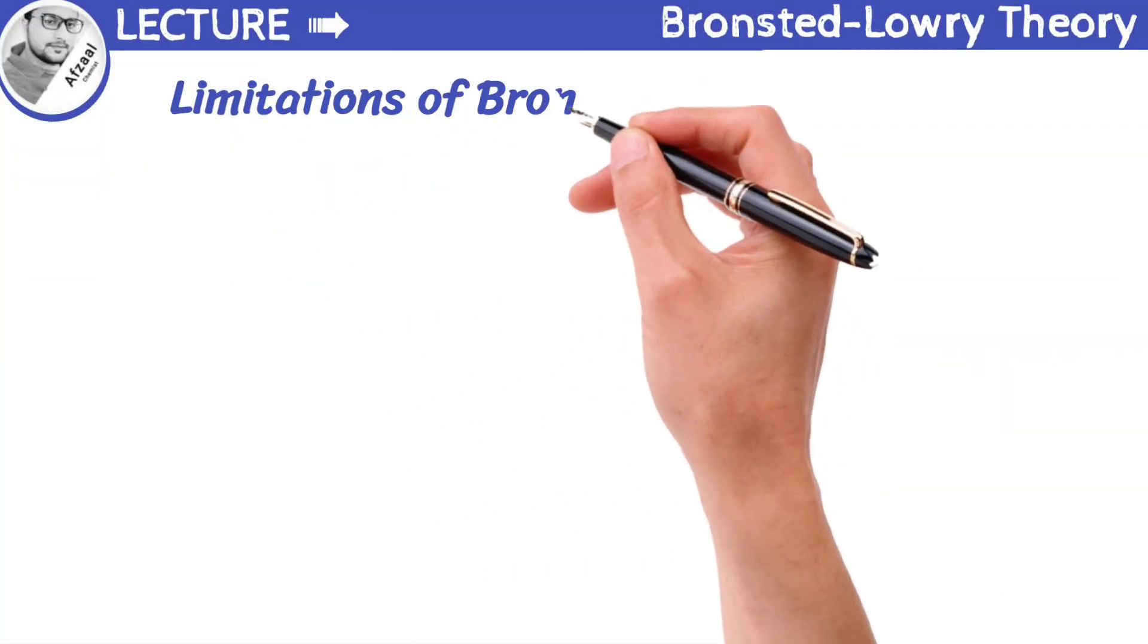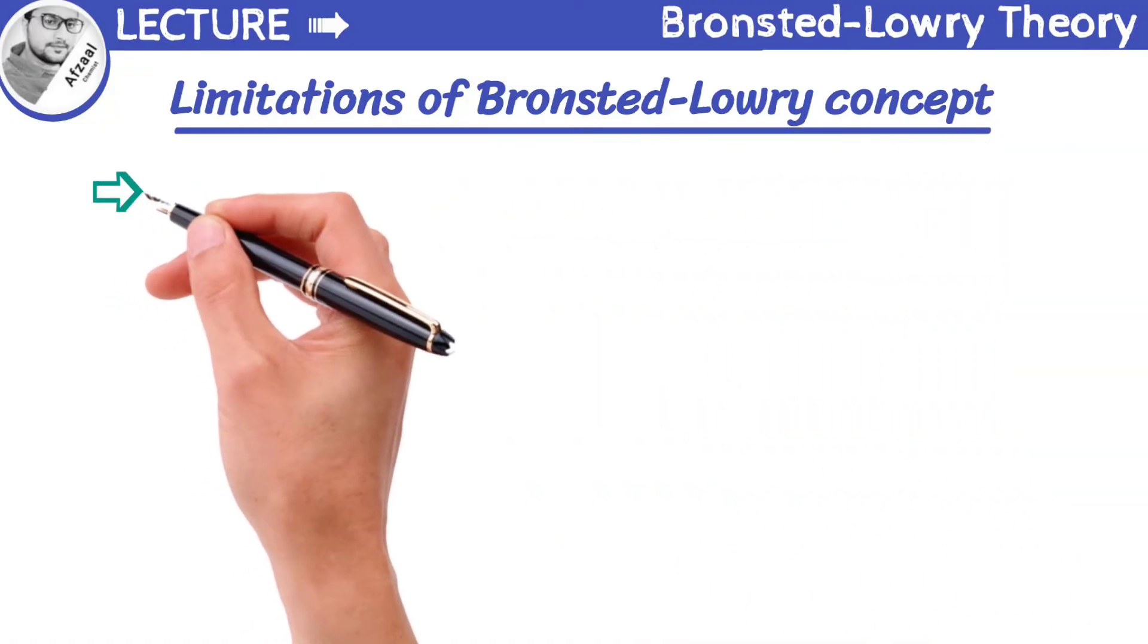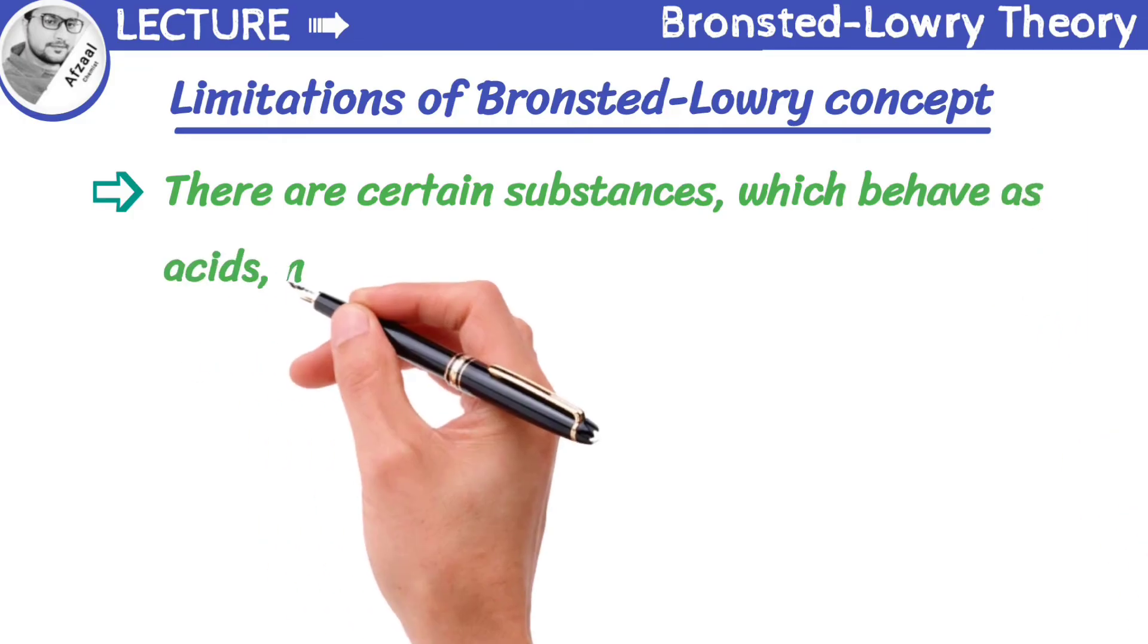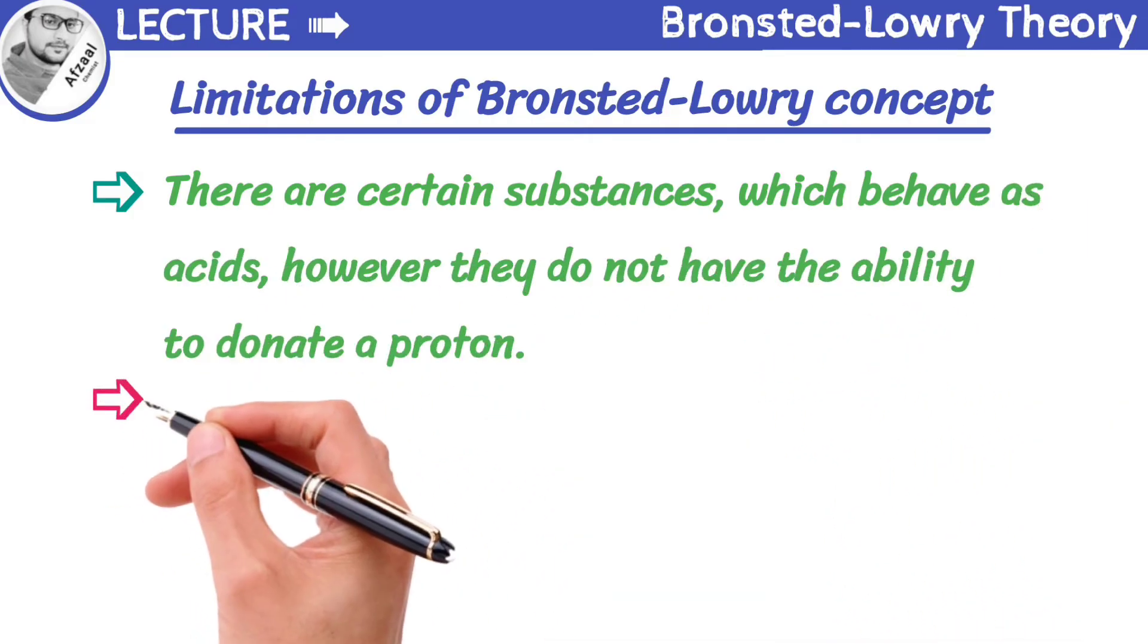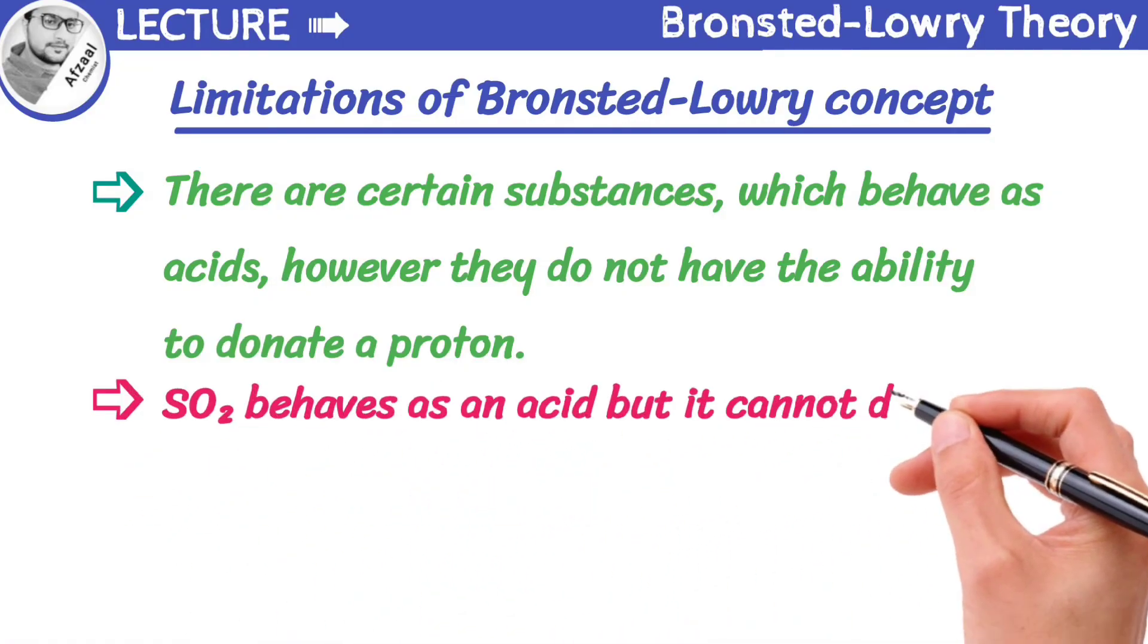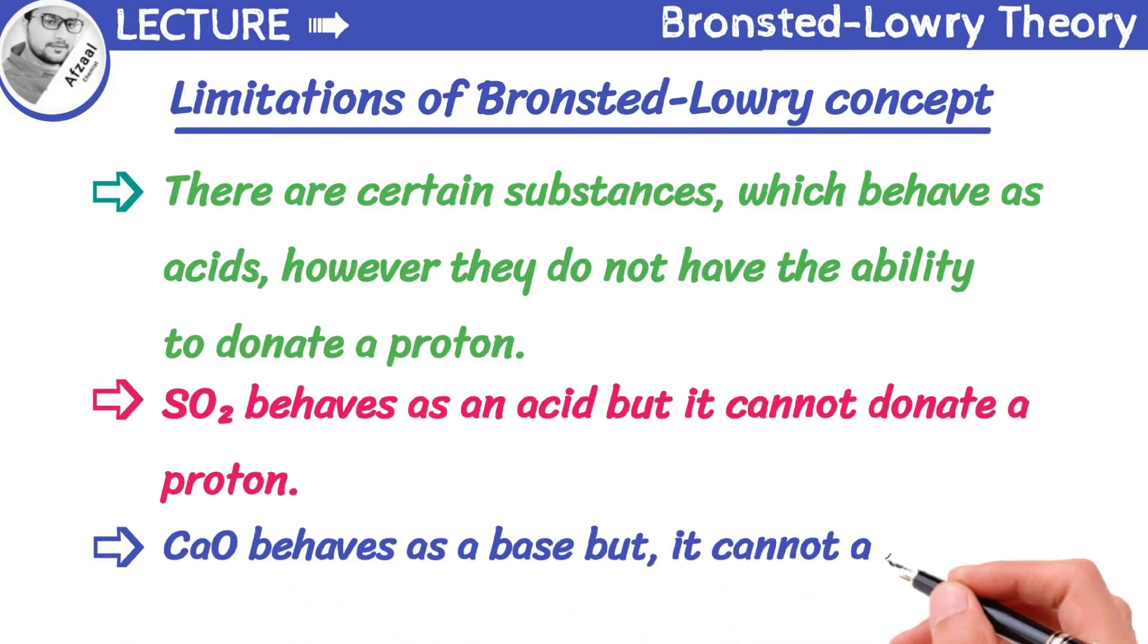Despite its significance, Bronsted-Lowry theory does have its limitations. It has been observed that there are certain substances which behave as acids. However, they do not have the ability to donate proton. For example, sulfur dioxide behaves as an acid, but it cannot donate a proton. Similarly, calcium oxide behaves as a base, but it cannot accept a proton. These observations prove limitations of Bronsted-Lowry concept of acids and bases.